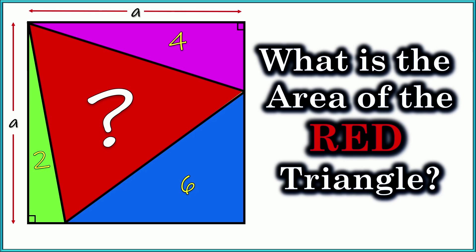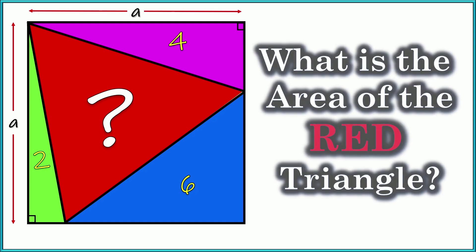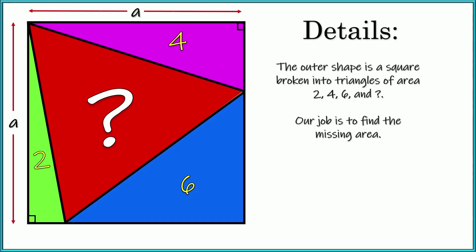Well, hello and welcome everybody. I'm glad you're here. I've got this pretty cool geometry problem. We've got a square, side length of A, and it's broken into four different triangles.